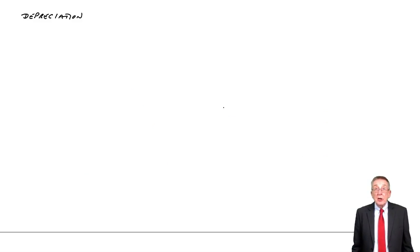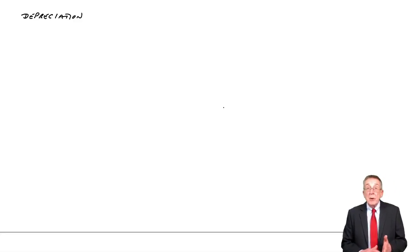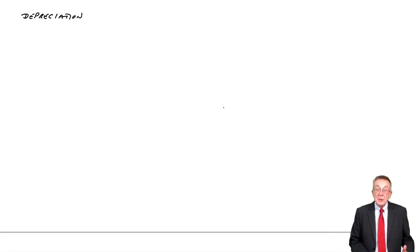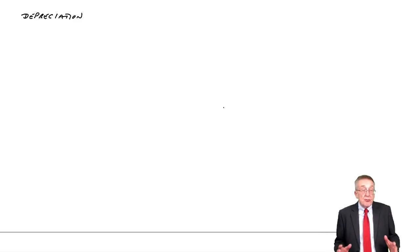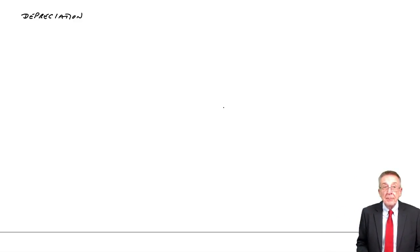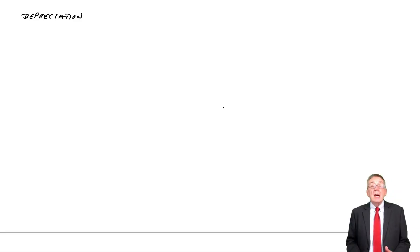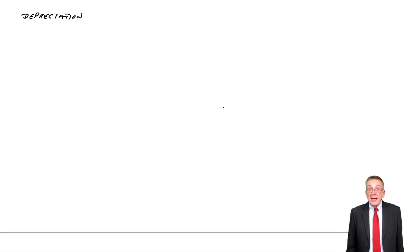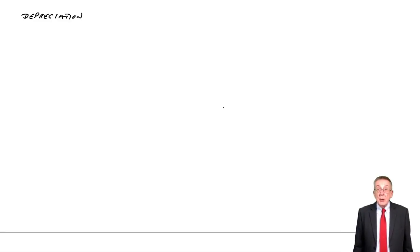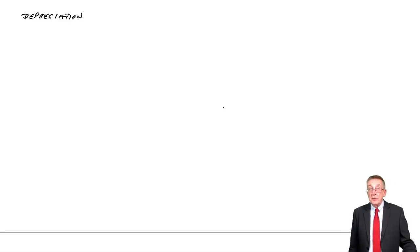We've been through in the previous lectures the two different ways of calculating depreciation: straight line and reducing balance. That's really what's important to the exam, because there's not a lot of debits and credits in the exam. However, to be safe, let me show you what the double entries are and how we actually account for it.